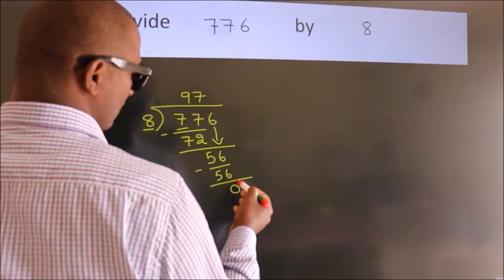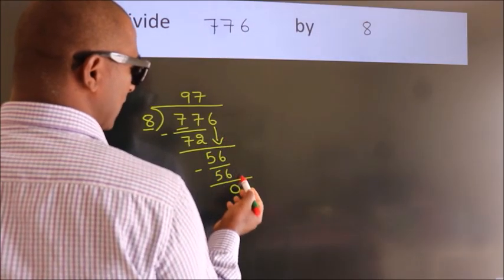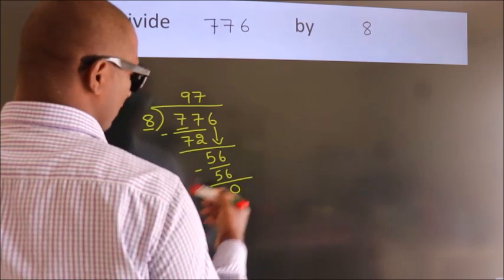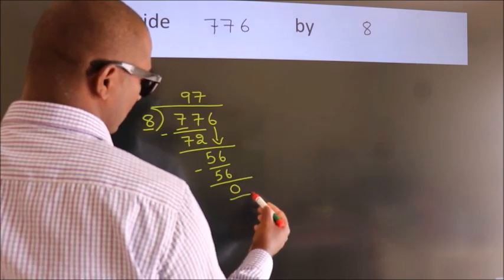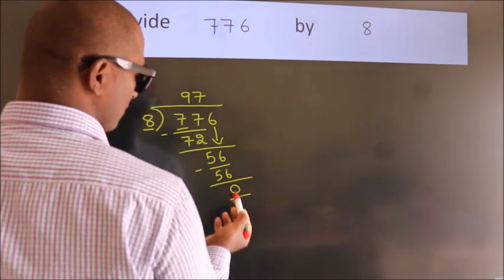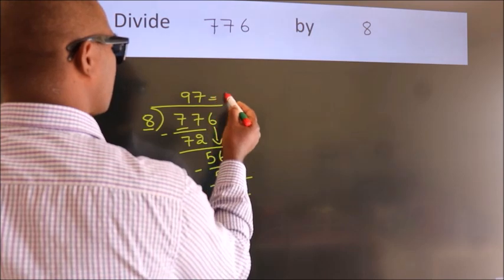After this, no more numbers to bring it down. And we got remainder 0. So, this is our quotient.